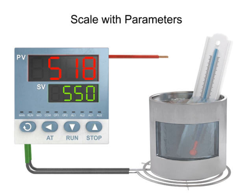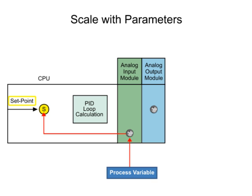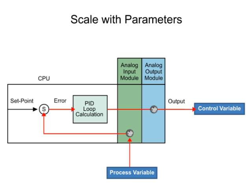PID control is a common closed-loop system used to maintain physical properties such as pressure and temperature in automated processes. The PID instruction controls the closed-loop by comparing the input or process variable from an analog input module to the system set point. The difference between the set point and the process variable is referred to as error. The error is analyzed by the PID loop calculation and provides an output or control variable to an analog output module to meet the set point defined by the system requirements.